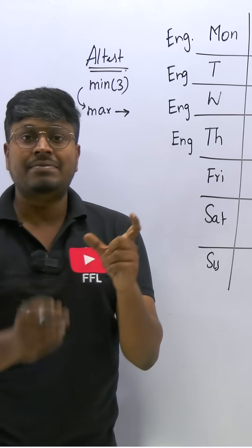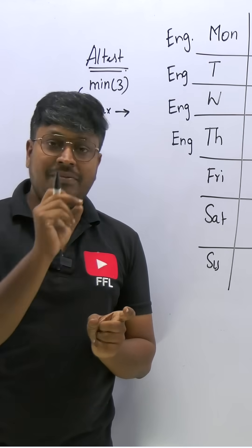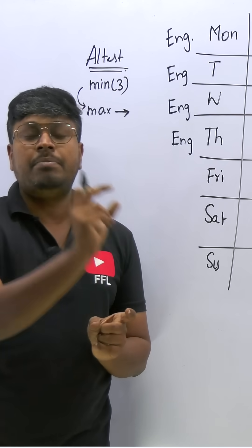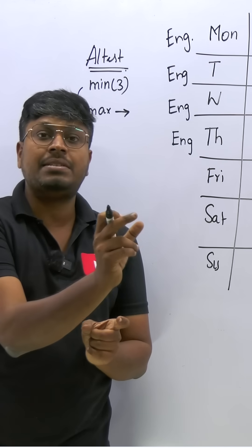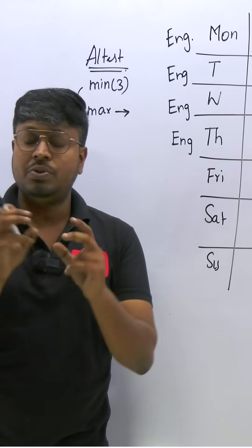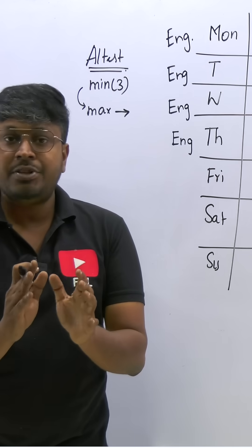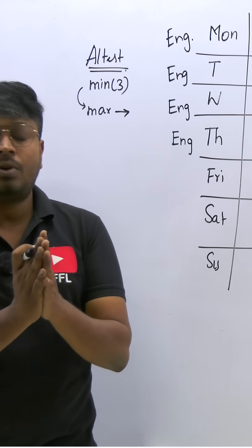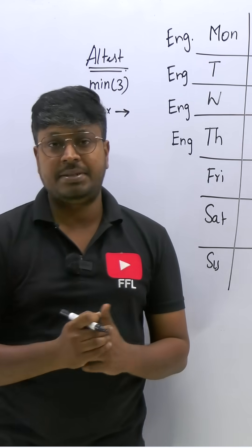Minimum three, maximum six. So whenever you find the word 'at least' in a seating arrangement, be very careful — 'at least' means minimum to maximum. 'At most' means maximum to minimum, plus none. These two words play a major role in seating arrangements, especially in week-based puzzles and box-based puzzles.